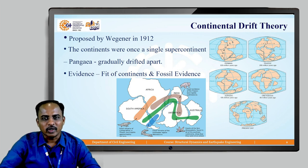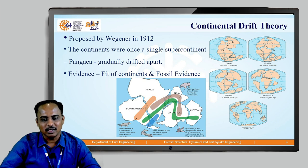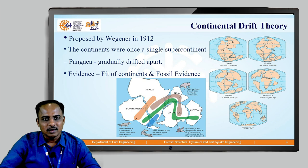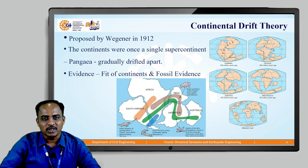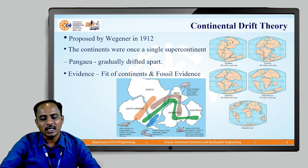Coming to the next point: continental drift theory. It was proposed by Wagner in 1912. He states that the continents were once a single supercontinent called Pangaea, which gradually drifted apart. The evidence for this is the fit of continents and fossil evidence, among other evidences.